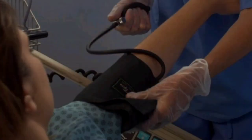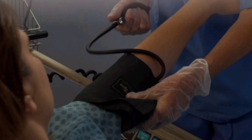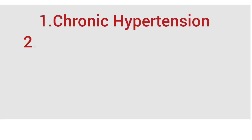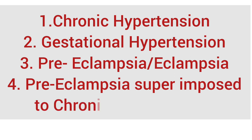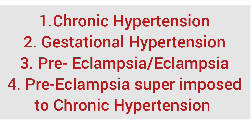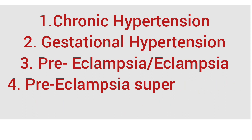A classification recommended by the U.S. National High Blood Pressure Education Programme on High Blood Pressure in Pregnancy uses four categories of hypertensive disorders in pregnancy: 1. Chronic hypertension, 2. Gestational hypertension, 3. Preeclampsia and eclampsia, 4. Preeclampsia superimposed on chronic hypertension.